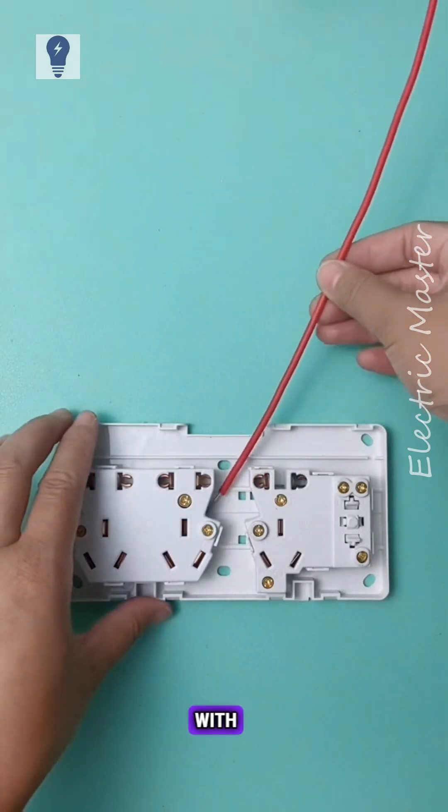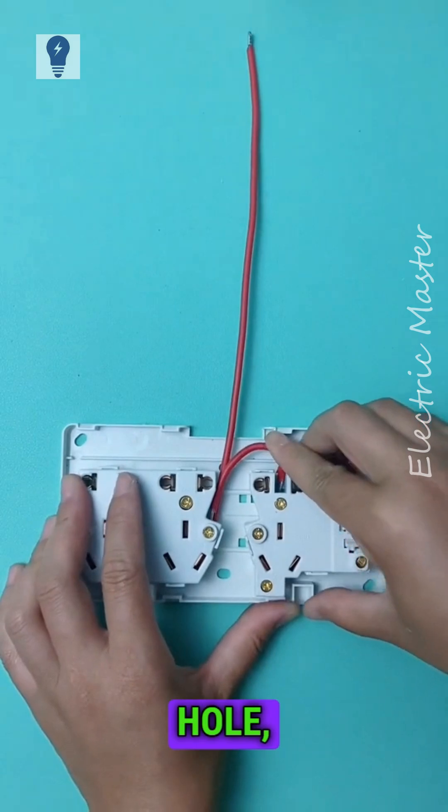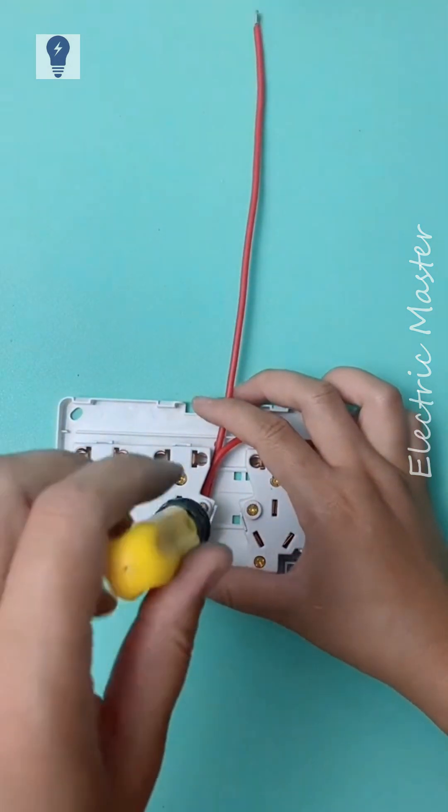Let's see how to wire a 15-hole socket with a single switch. First, connect a red live wire to the socket's L-hole, then jump to another socket's L-hole, and finally to the switch's L-hole.